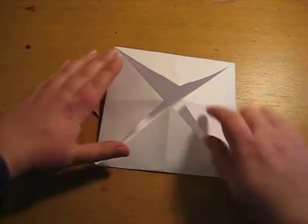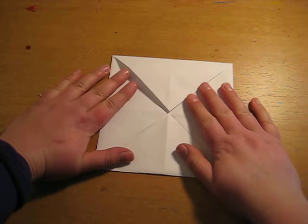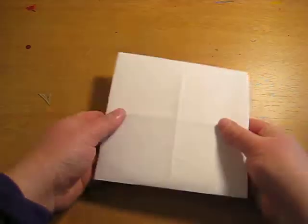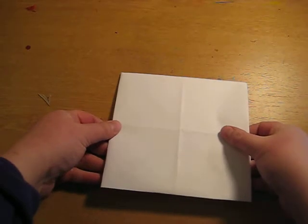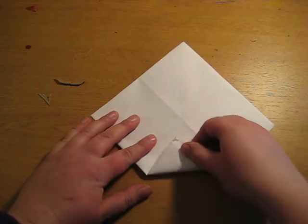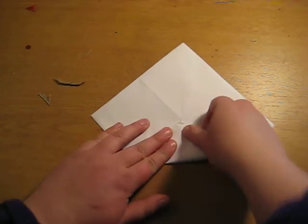Now, you should have four triangle flaps. What you want to do now is actually flip it over to see your four squares. And you're going to do the same process where you take each corner and fold it to the middle again.